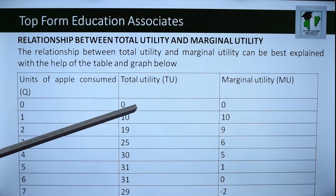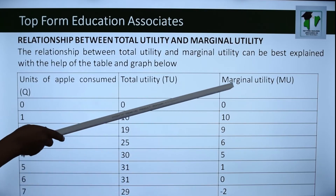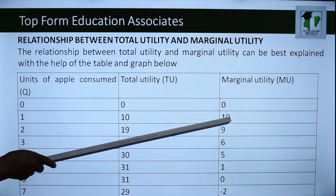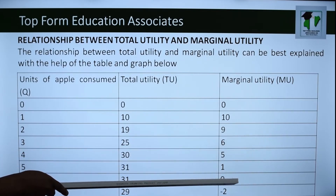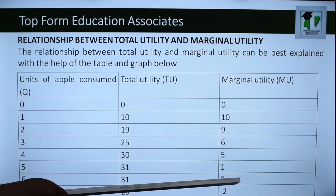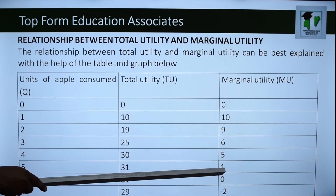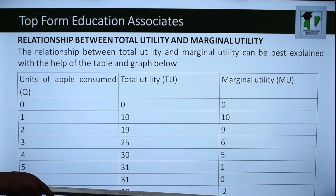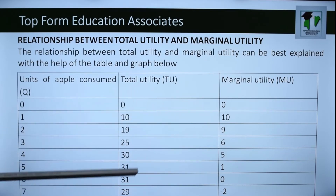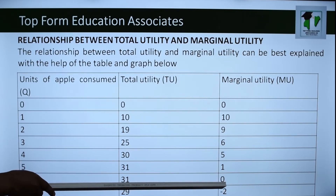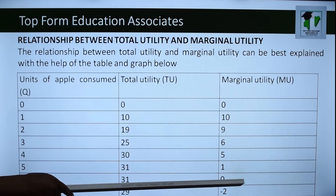One thing is certain: total utility was increasing, reached a maximum, then started decreasing. Marginal utility started decreasing after consumption of the first unit — 10, 9, 6 — and reached zero. Once MU is zero, you can no longer get satisfaction. When total utility is maximum, marginal utility is zero; as total utility increases, marginal utility decreases.